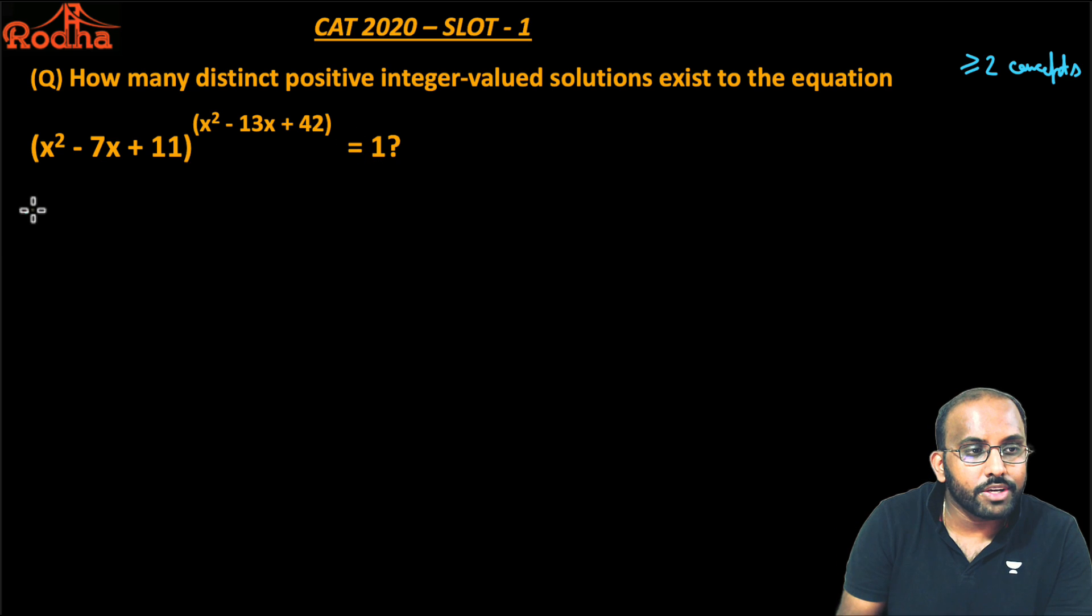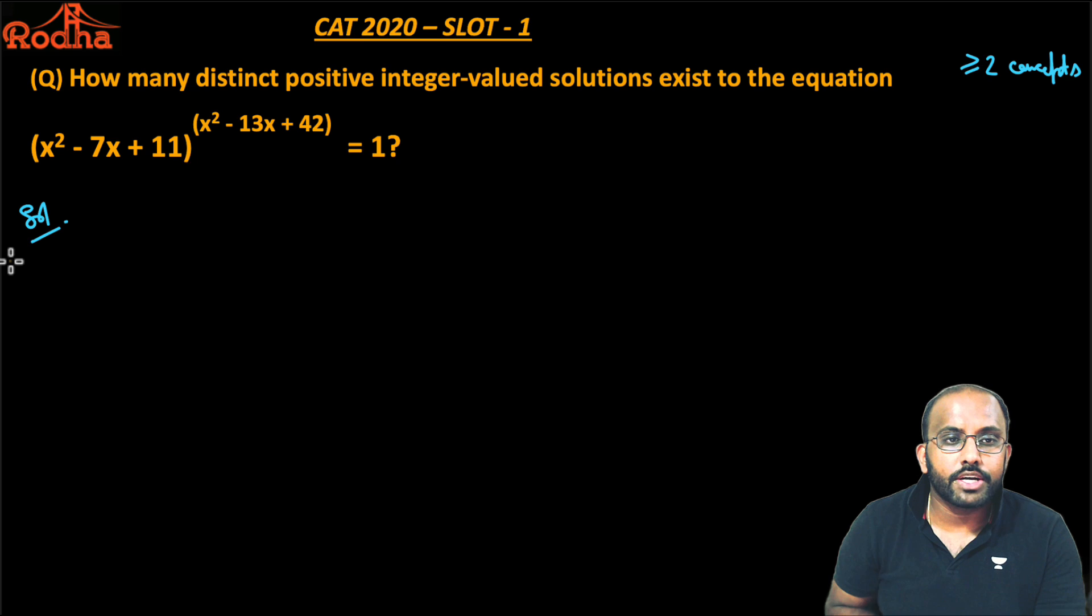This question asks: How many distinct positive integer-valued solutions exist to the equation (x² - 7x + 11)^(x² - 13x + 42) = 1?